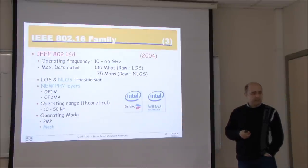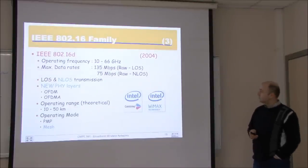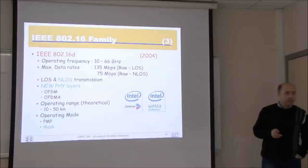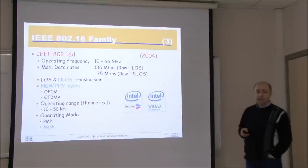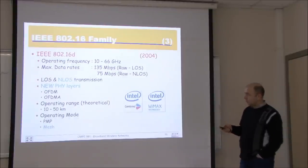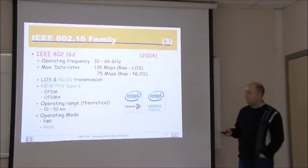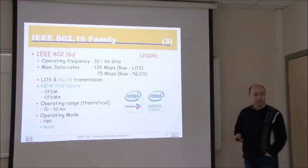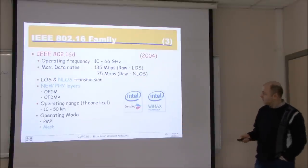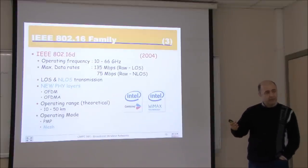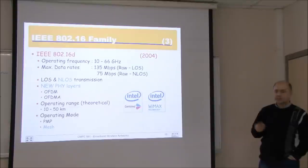802.16D — we had A, then wrapped up everything in 2004 in 802.16D. The same frequency range and the same raw data rate for line of sight. Now it also allowed non-line of sight, but of course the data rate dropped almost by half without line of sight. It introduced new physical layers like OFDM and OFDMA. The operating range was again almost the same. In addition to PMP, we also had the mesh mode — but no one implemented the mesh mode in their devices. Intel was a strong supporter of WiMAX and introduced chips allowing WiMAX, and we had some notebook computers that came with onboard WiMAX interface.